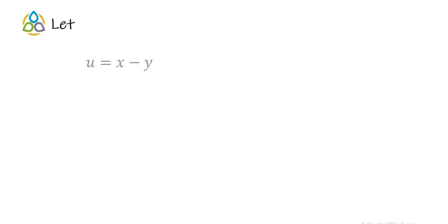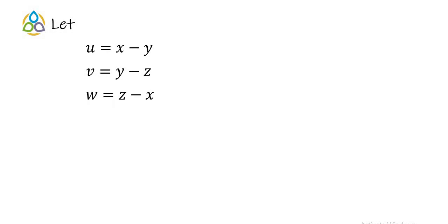We assume that u = x − y, v = y − z, and w = z − x. Note that u + v + w = (x − y) + (y − z) + (z − x) = 0.